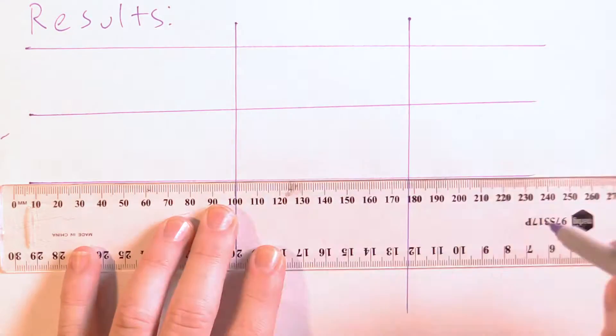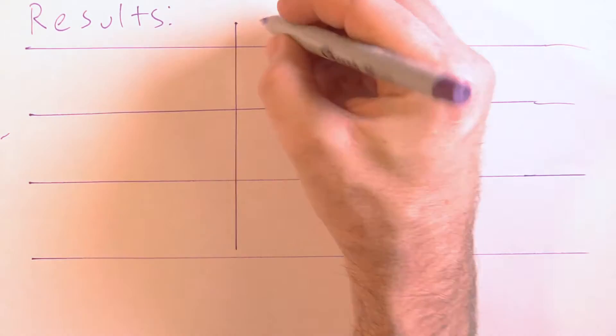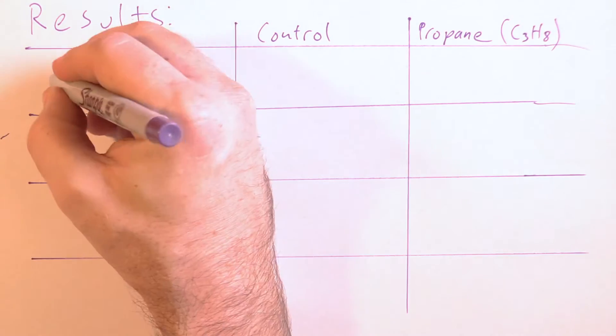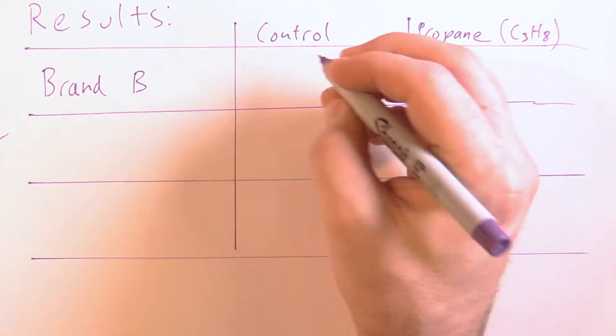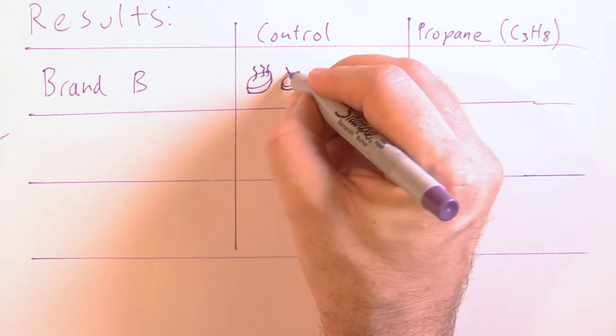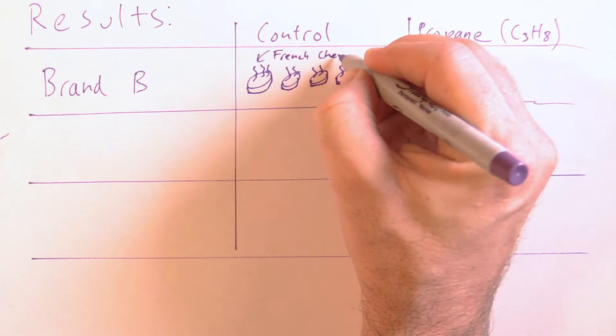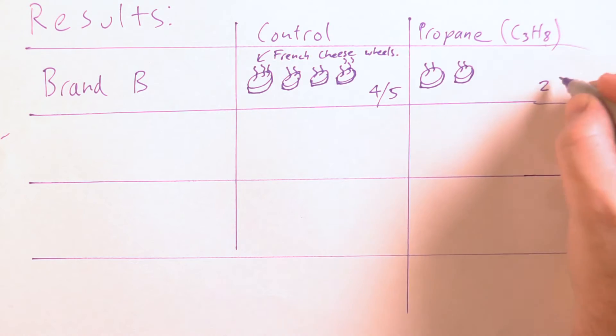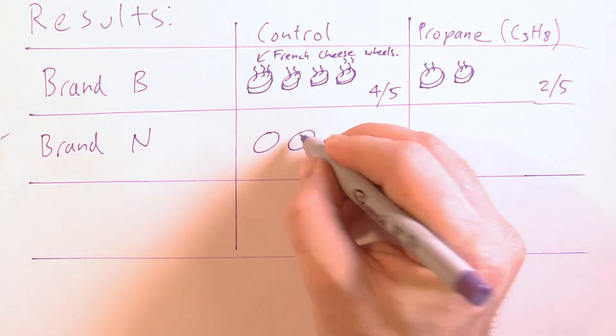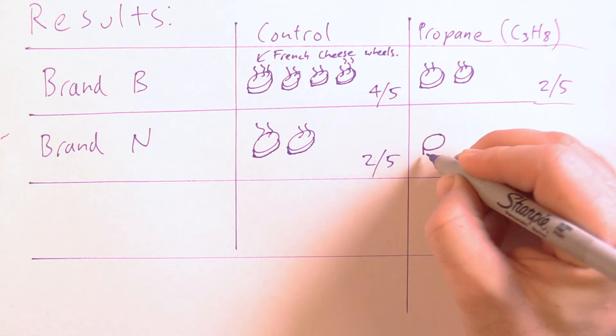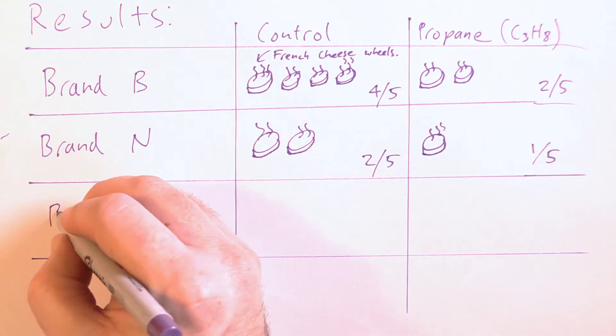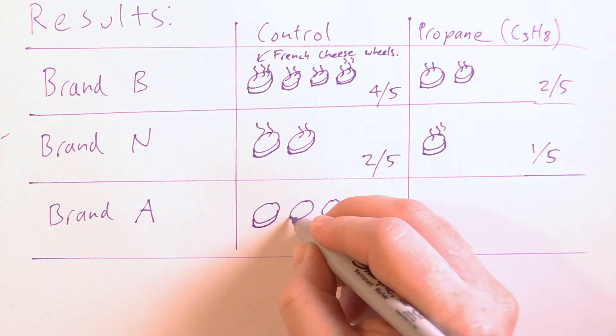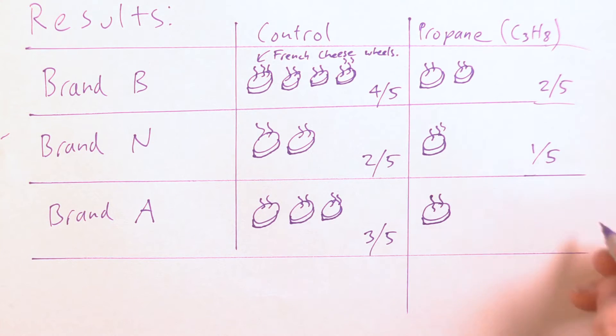Okay, so what I've done is I've rated each shoe in terms of smell. I've rated them on a scale of one to five with five being the smelliest, and in the table I've designated the scale as French cheese wheels. So firstly, brand B went from a smell of four out of five to two. Brand N went from a smell of two, wasn't that bad, to a smell of one. And brand A went from a smell of three down to a smell of one. So I think the propane definitely has an effect on foot odor.